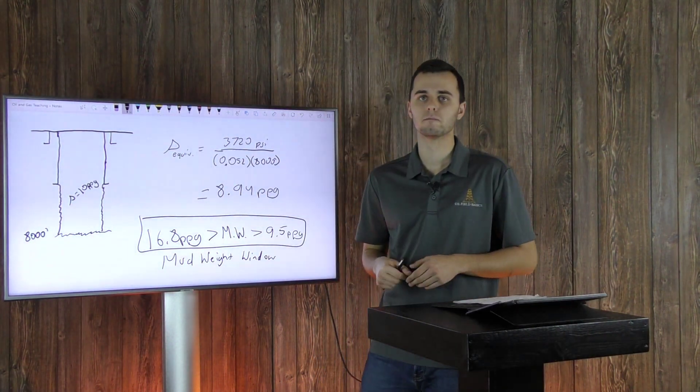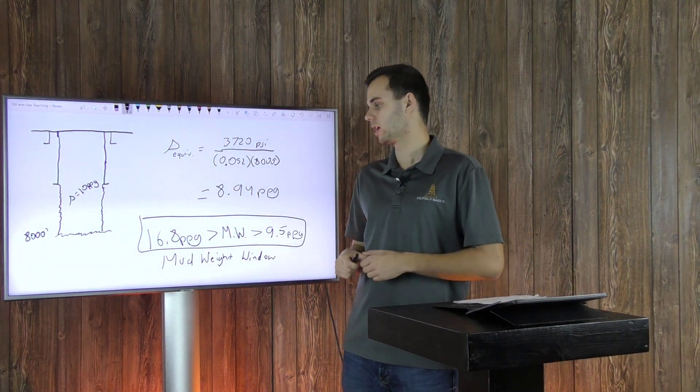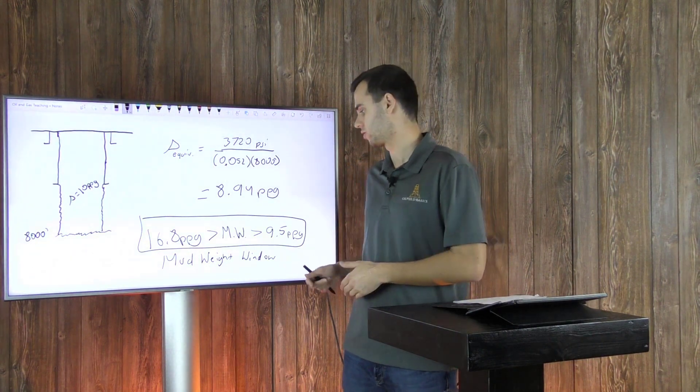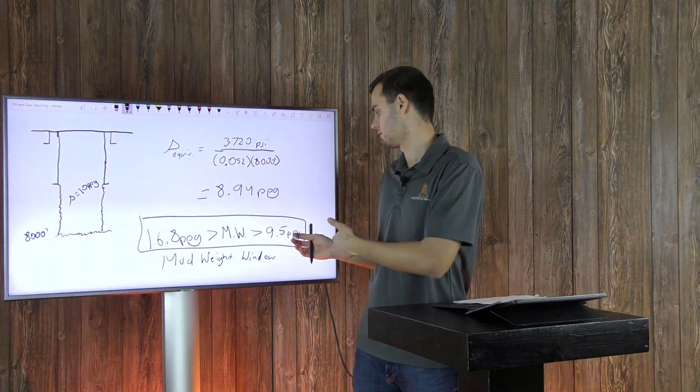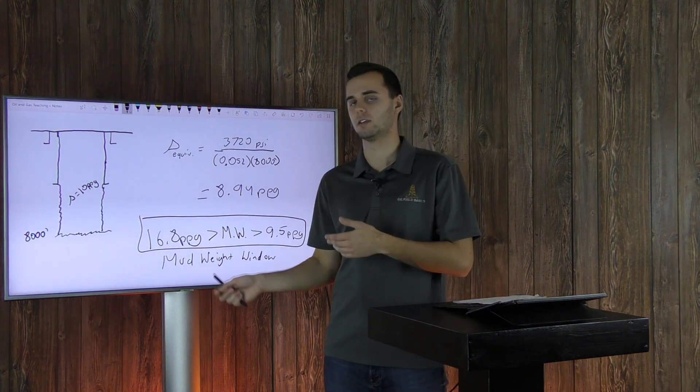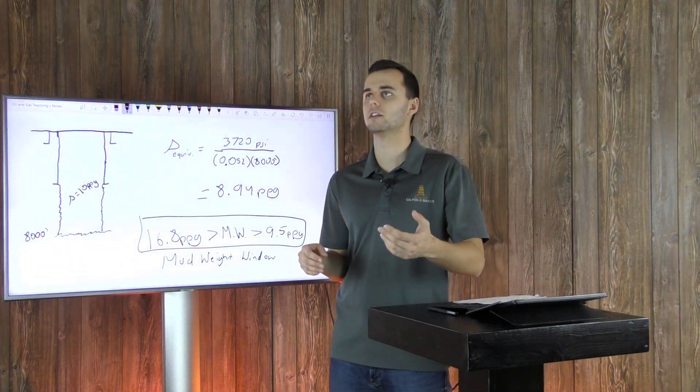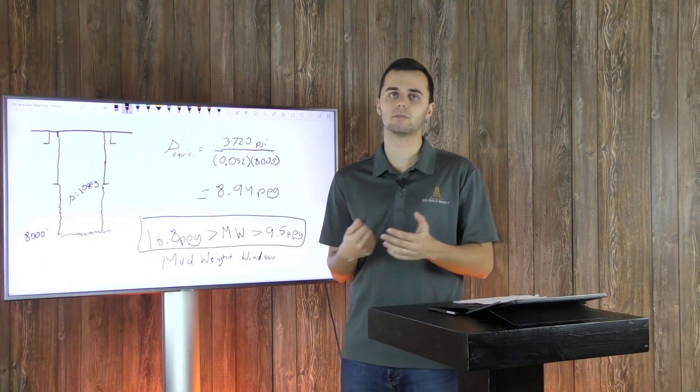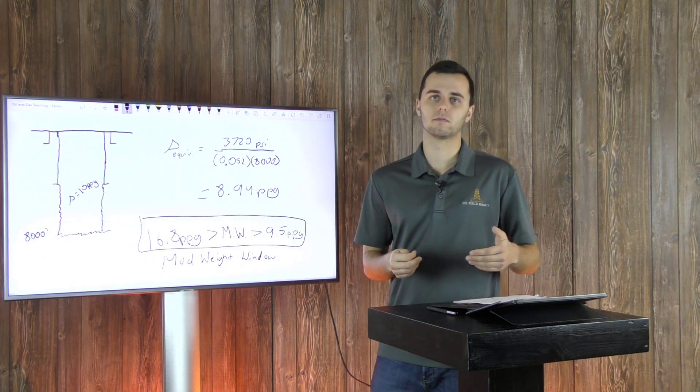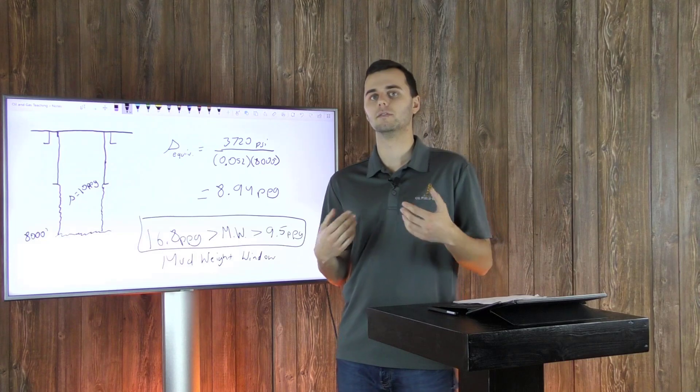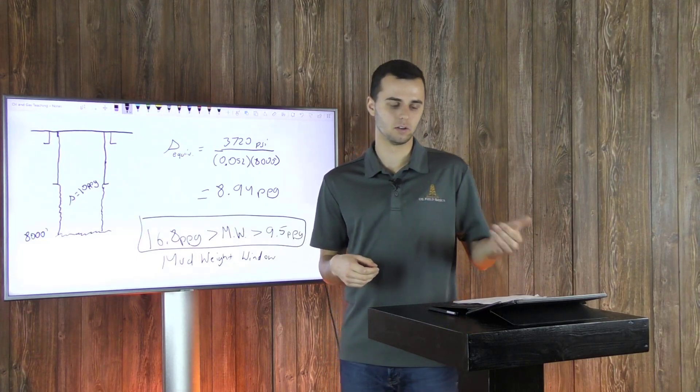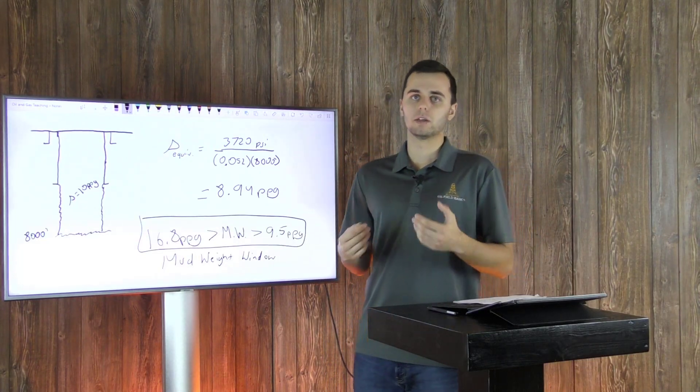It'll help you keep a check on your mud weights. Make sure that mud weight doesn't go below 9.5 pounds per gallon or go above 16.8. Again, the gradients will depend on the formation you're in, the location that you're drilling through, the rock types. These are just numbers that we've been taught in school and that we've seen before out on location.